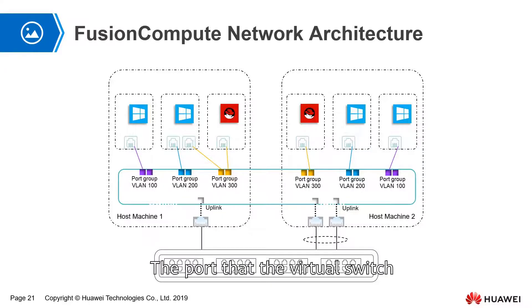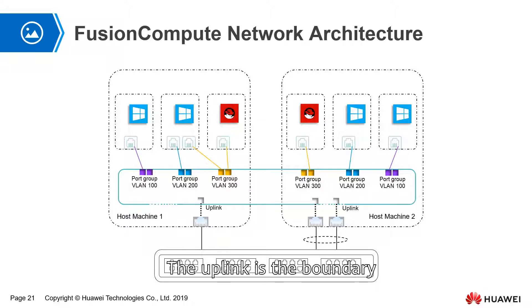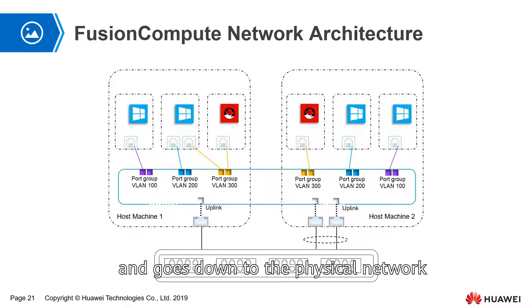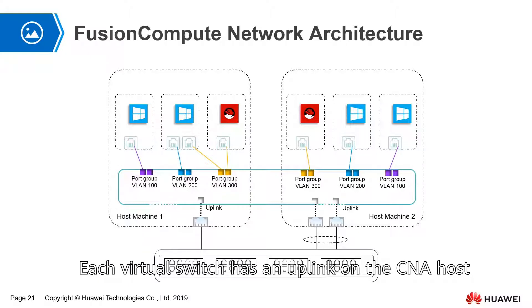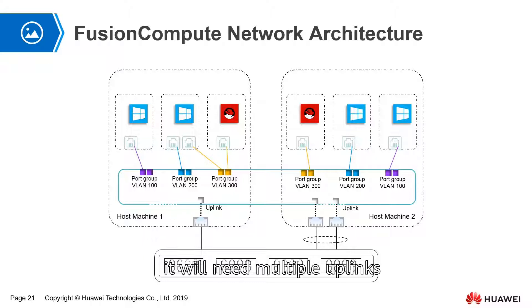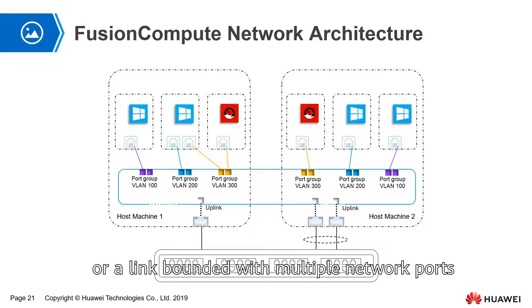The second keyword is uplink. The port that the virtual switch links to the physical NIC is the uplink. The uplink is the boundary between the virtual network and the physical network in Huawei's Fusion Compute — it goes up to the virtual network and down to the physical network. Each virtual switch has an uplink on the CNA host. If there are multiple virtual switches on a CNA, it will need multiple uplinks. The uplink may correspond to a single network port or a link bonded with multiple network ports.